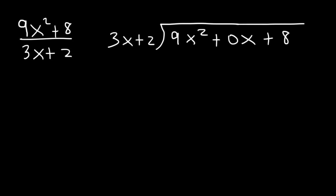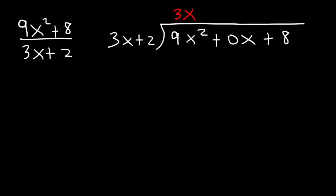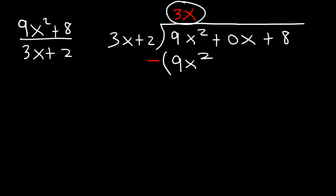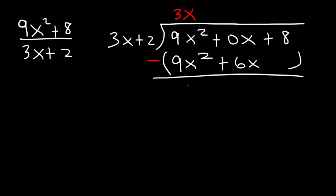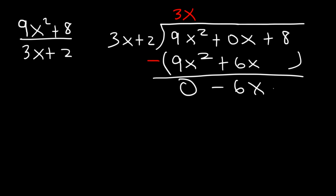Divide: 9x squared divided by 3x is 3x. Multiply: 3x times 3x is 9x squared, and 3x times 2 is positive 6x. Subtract: 9x squared minus 9x squared is 0, and 0x minus 6x is negative 6x. If you forgot the 0x placeholder, you might write positive 6x instead of negative 6x, so watch out for that.